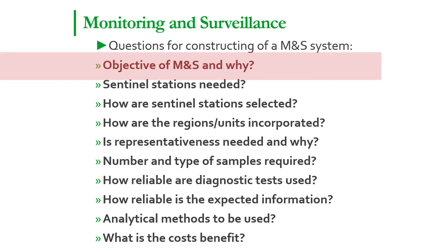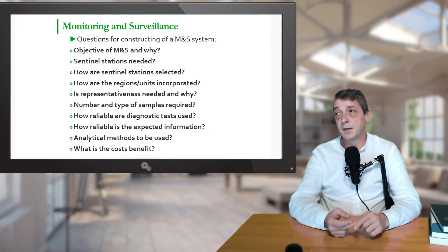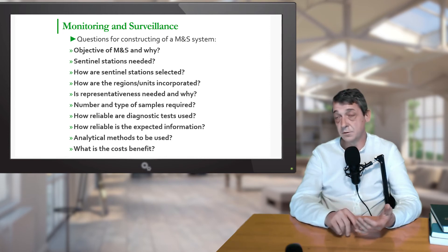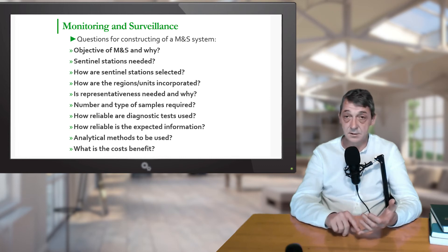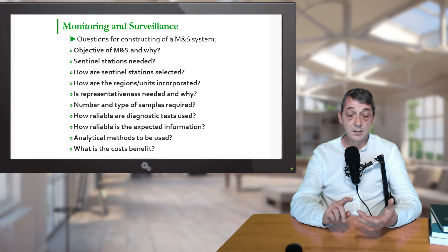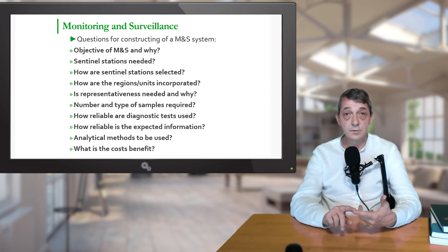The second question is: what and what type of sentinel stations are needed? For both brucellosis and tuberculosis monitoring, we need veterinary stations in the field which will collect the data. We need the competent authority who will design the system, analyze the system, and also pay in the end. We need inspectors to control them, and in case of brucellosis we also need the laboratory.